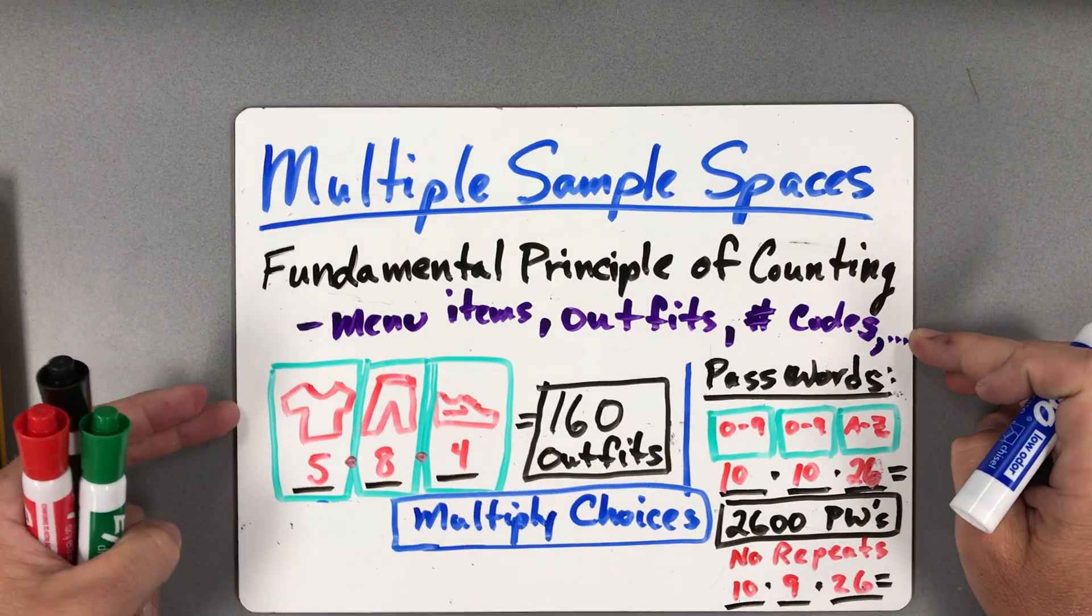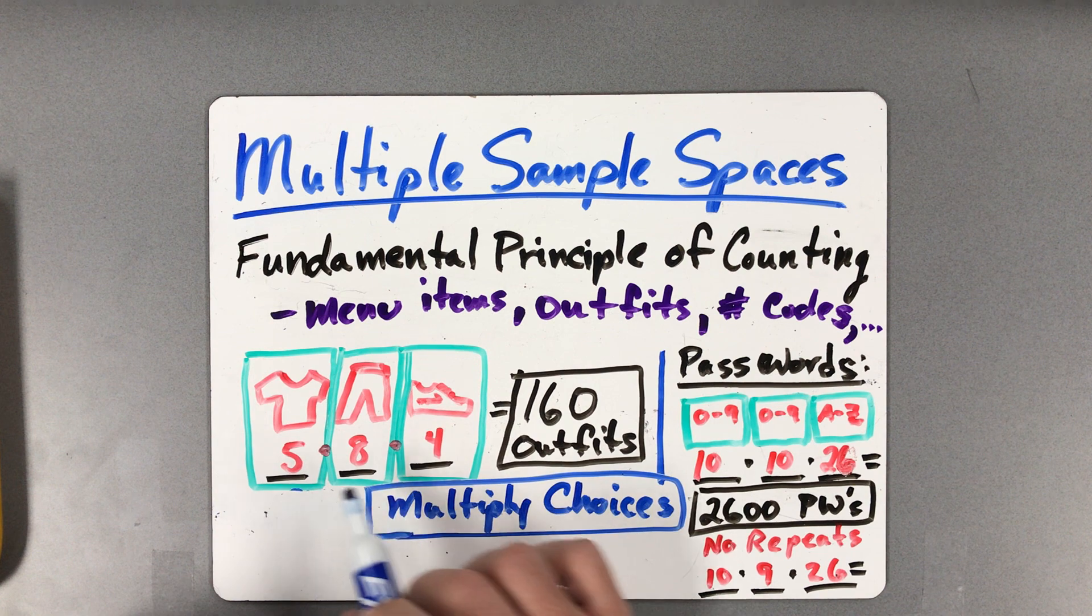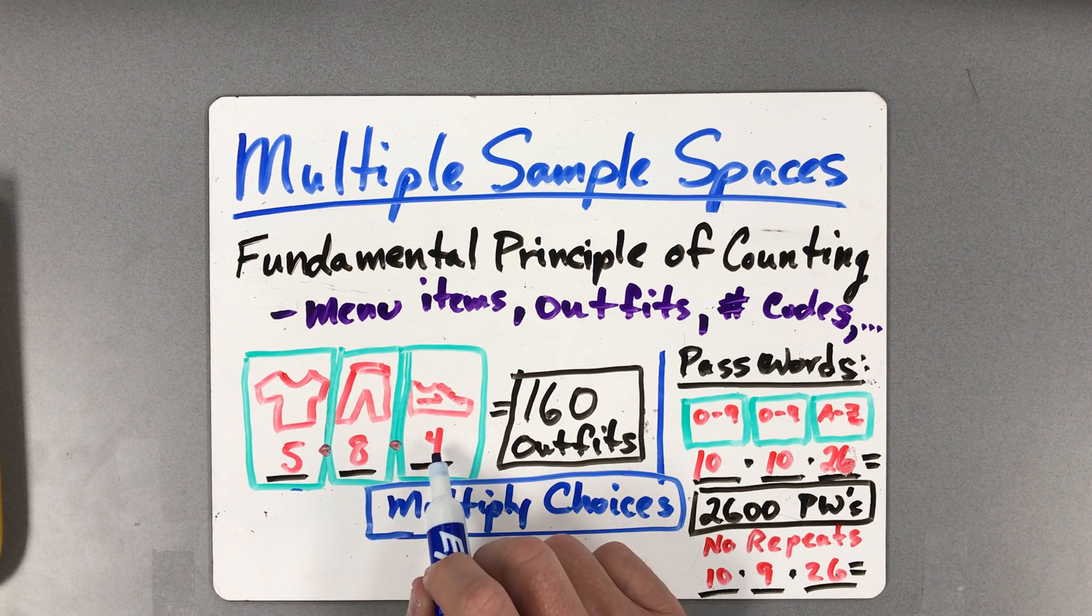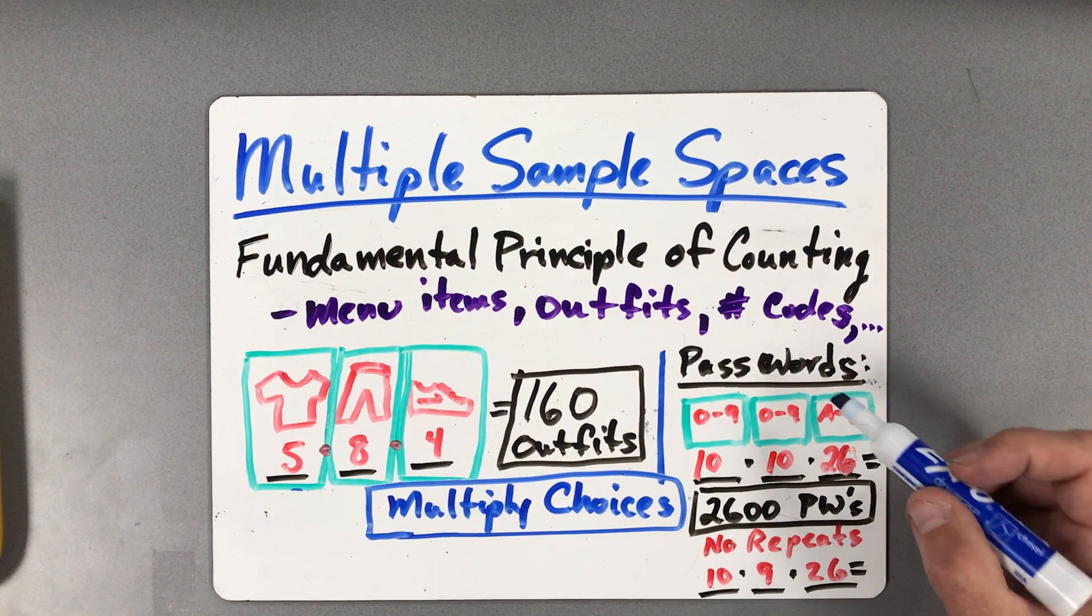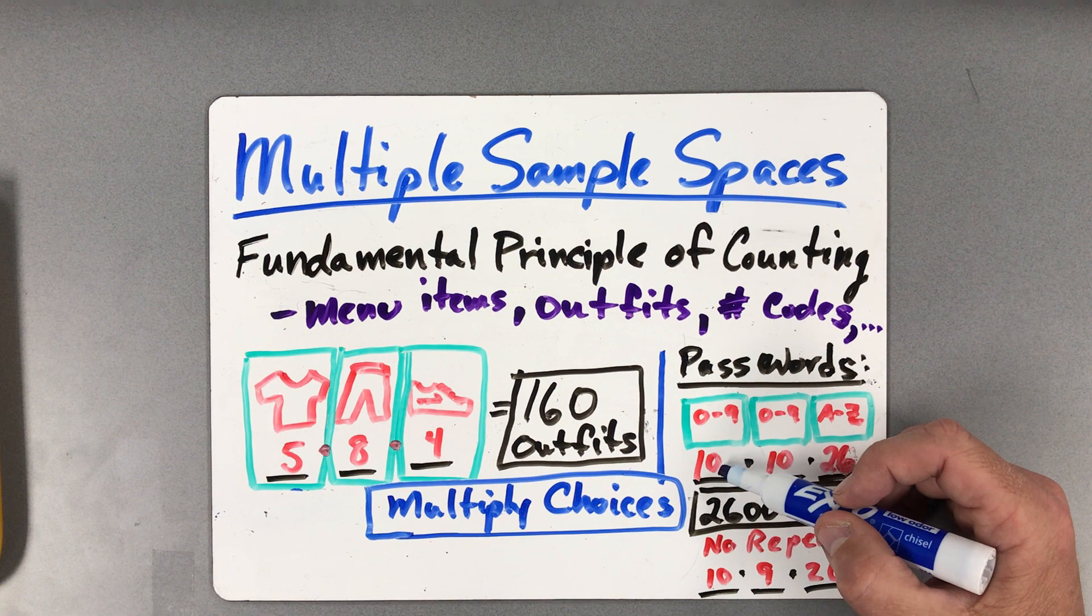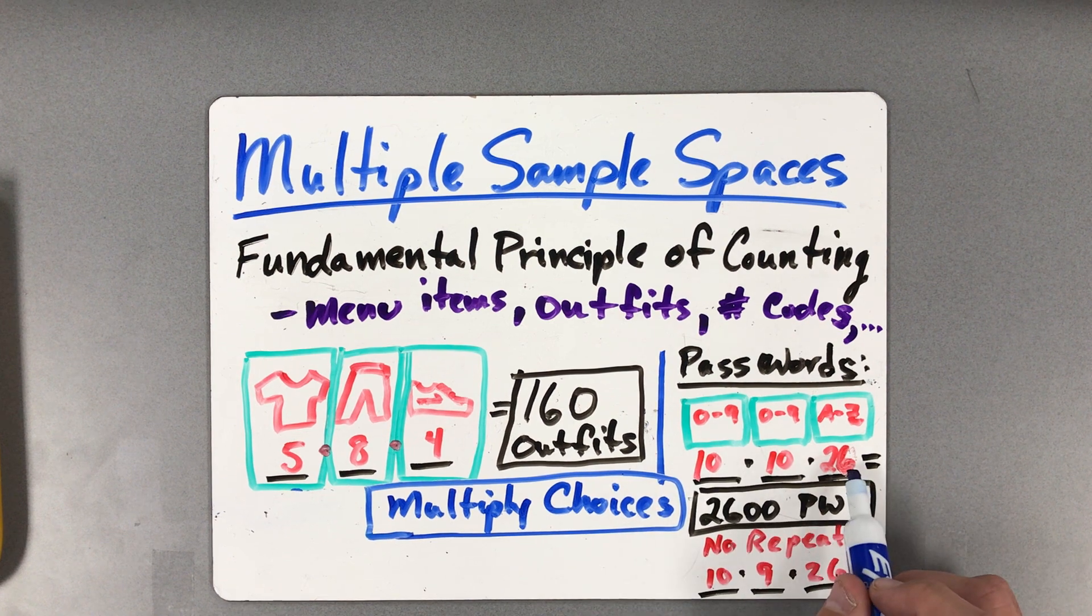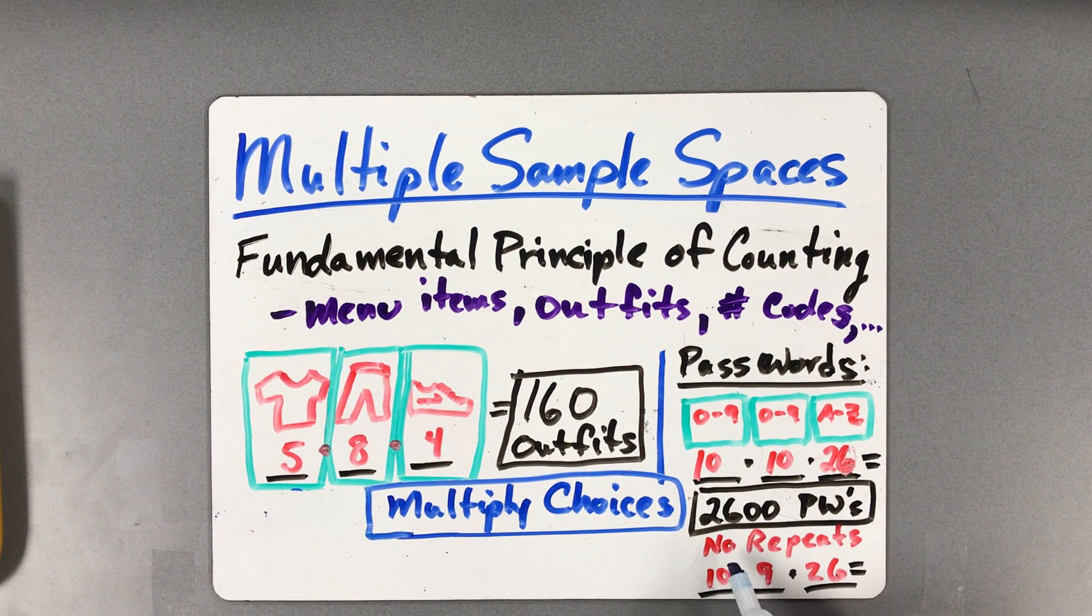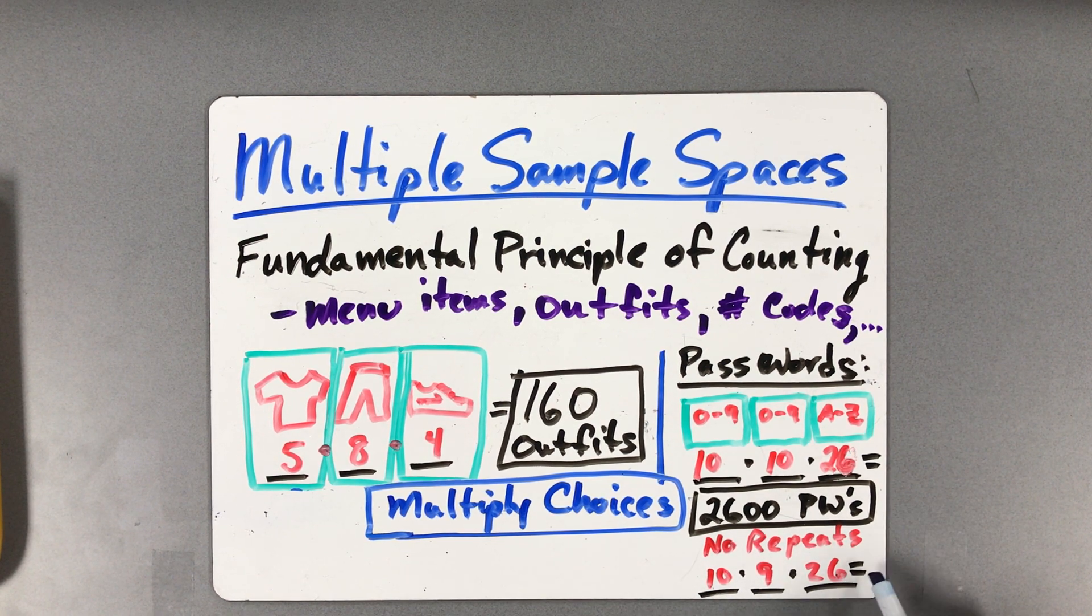Now, that's one sample space. If I have multiple sample spaces, then I'm looking at outfits, menu options, and so on. The simple idea behind all this is just multiply your sample space options together, or your choices. I have five choices of shirts, eight choices of pants, and four choices of pairs of shoes, which means that if I multiply 5 times 8 times 4, I'll have 160 outfits. Passwords work the exact same way. You have characters zero through nine to choose from, which is ten total options. If I wanted a password consisting of two numbers and a letter, then I would have 10, 10, and 26 multiplied together to give you 2,600 different possible ways.